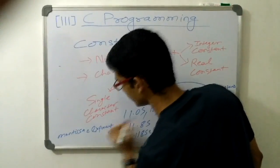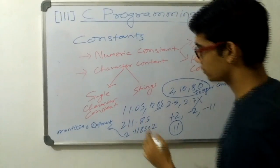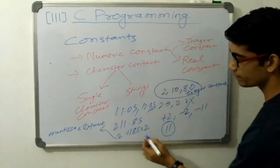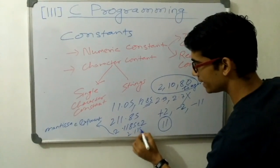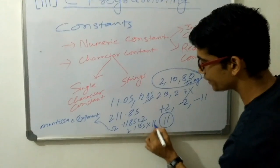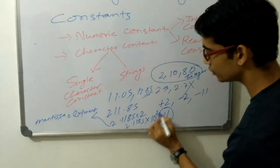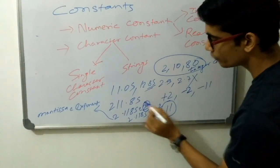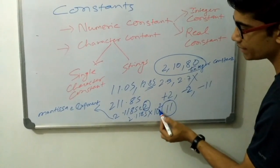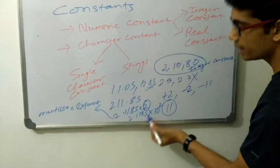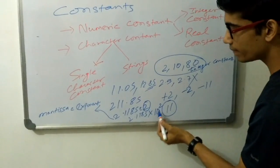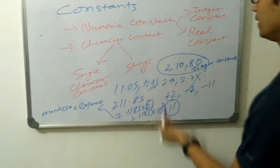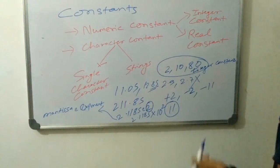Whenever we encounter this form, this means 2.1185 multiplied by ten to the power two. Had it been three in place of two, we would have multiplied by ten to the power three. Had it been four, we would have multiplied by ten to the power four, and so on. So this is the representation of real constants.